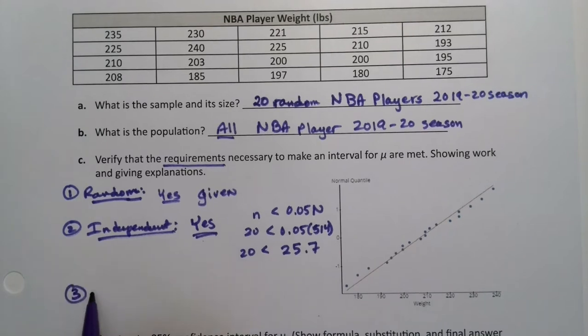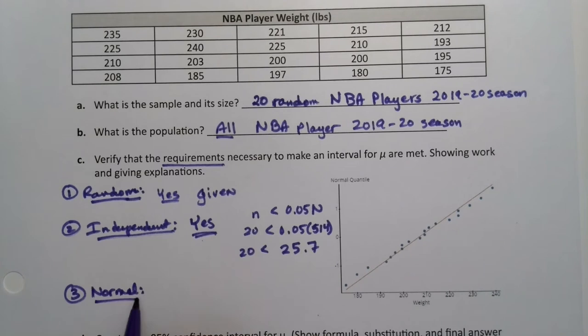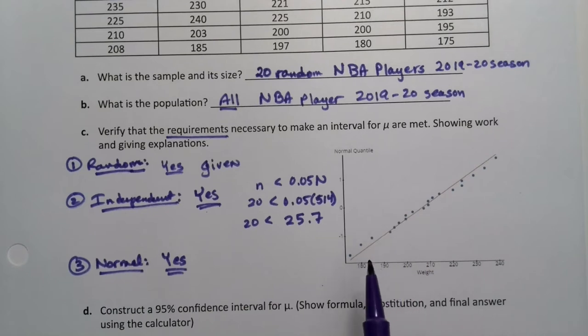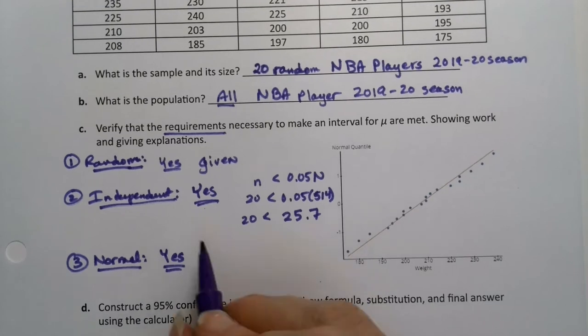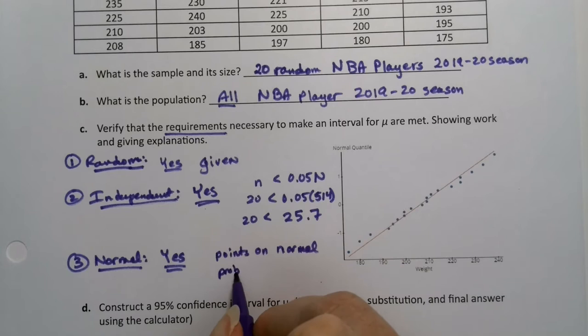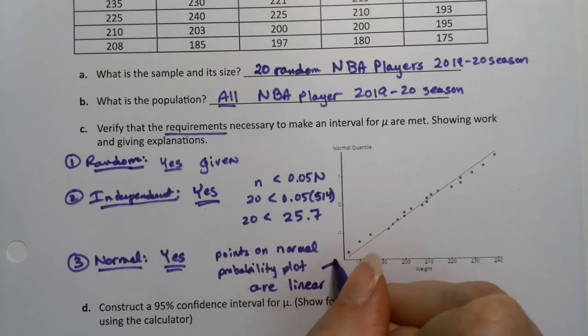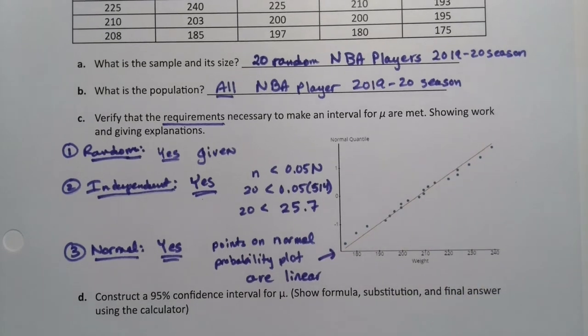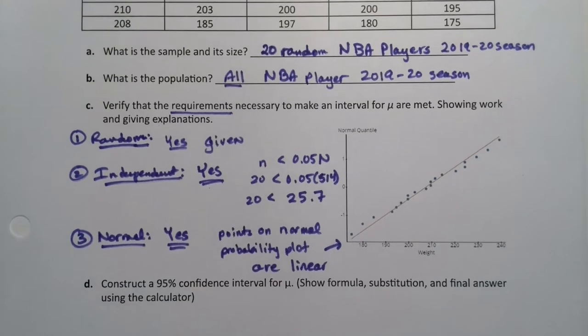And then normal, this will be a little bit different. We don't have greater than 30 but it's still a yes and it's because those points are linear. Remember that section from chapter seven - it's because the points on the normal probability plot are linear. And they don't have to be perfectly linear but they are very close to linear on this particular graph. Great, so our conditions are met.